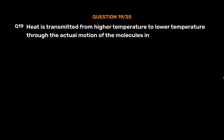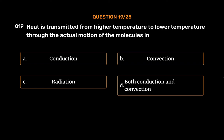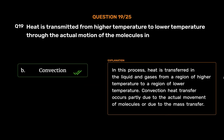Question No. 19. Heat is transmitted from higher temperature to lower temperature through the actual motion of the molecules in. Option A: Conduction. Option B: Convection. Option C: Radiation. Option D: Both conduction and convection. The correct answer is Option B: Convection. In this process, heat is transferred in liquids and gases from a region of higher temperature to a region of lower temperature. Convection heat transfer occurs partly due to the actual movement of molecules or due to mass transfer.